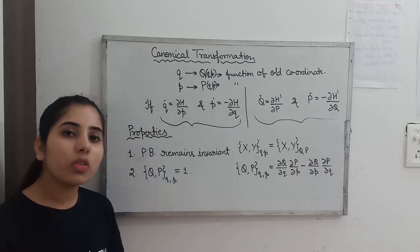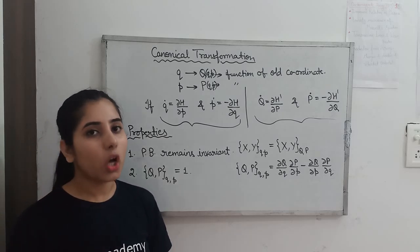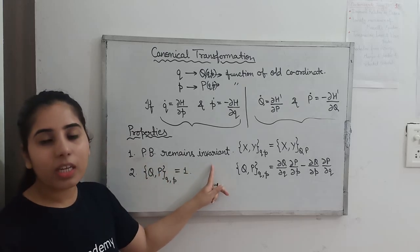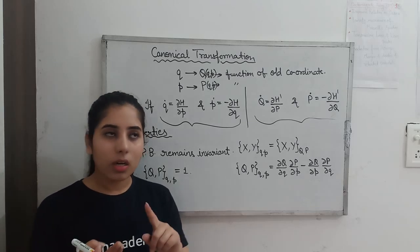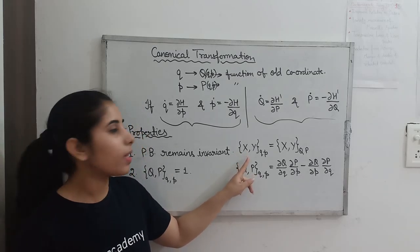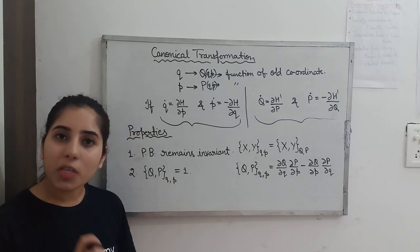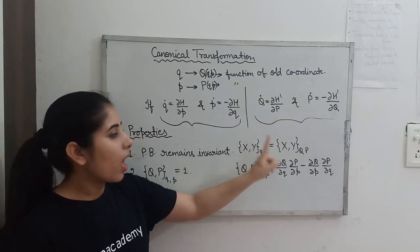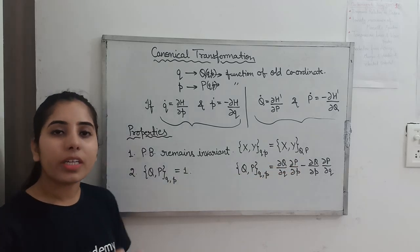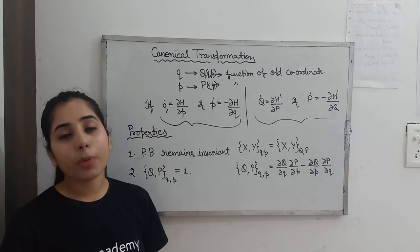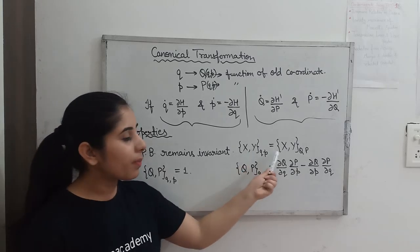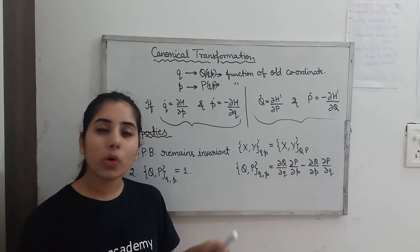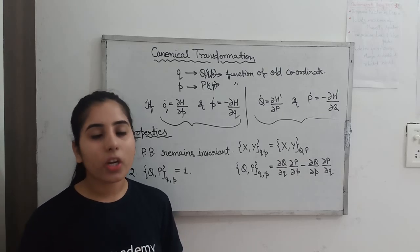Now let's talk about some other important properties of canonical transformation. In the case of canonical transformation, the Poisson bracket remains invariant. Taking the example of two functions x and y: if we find the Poisson bracket corresponding to the old coordinates q and p, and also find the Poisson bracket for the new coordinates capital Q and capital P, we will find the same value — there is no change in the Poisson bracket.